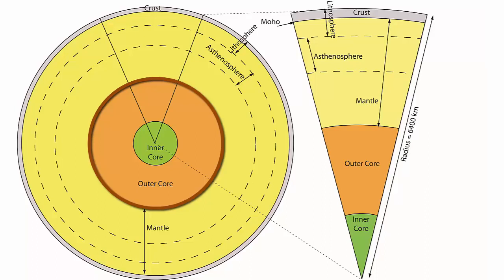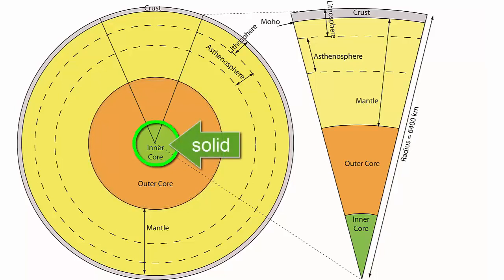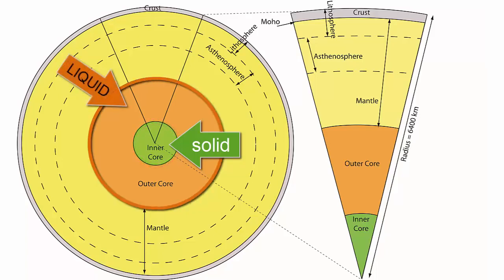However, physically we have a small solid inner core at the very center of the Earth, where, though temperatures are higher than anywhere else inside our planet, pressures are so high that liquid iron can't exist. Surrounding the inner core is a much larger liquid iron outer core.